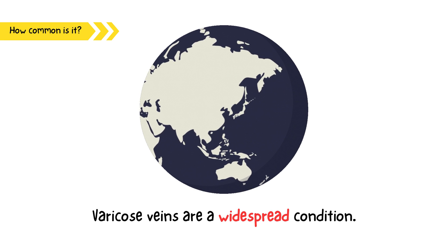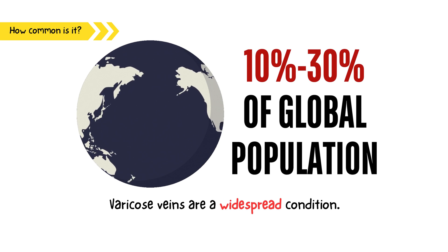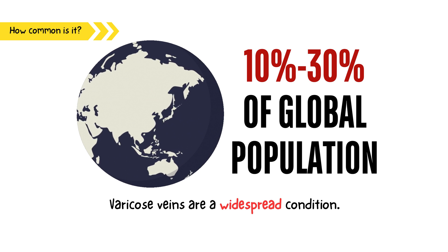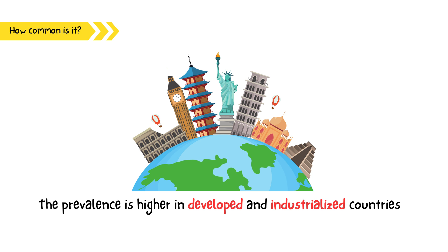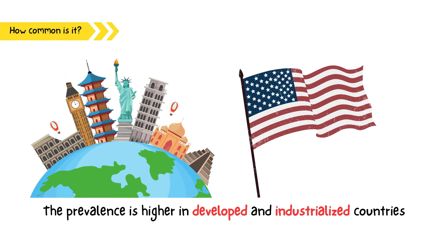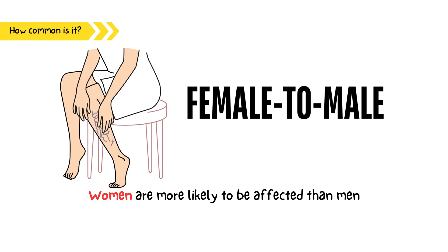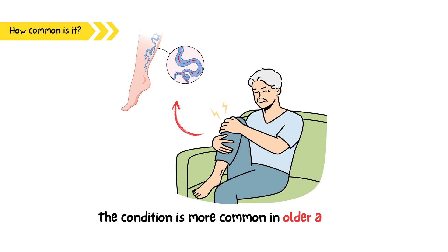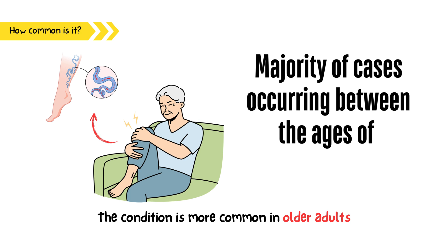Varicose veins are a widespread condition, affecting approximately 10% to 30% of the global population. The prevalence is higher in developed and industrialized countries, with the United States reporting a prevalence of around 23% among adults. Women are more likely to be affected than men, with a female-to-male ratio of approximately 2:1. The condition is more common in older adults, with the majority of cases occurring between the ages of 40 and 80.